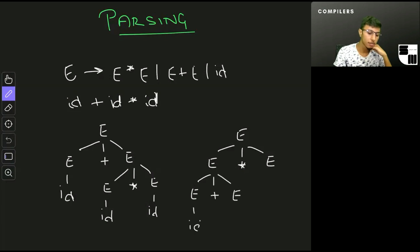Then convert these E's to identifiers. These are two different parse trees that I can construct for the same string, which means that the grammar that I have is ambiguous.